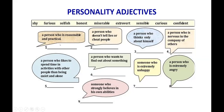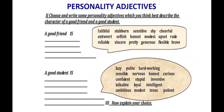Here I have another exercise for you to practice at home: choose and write personality adjectives that best describe a good friend. So — what do you think a good friend is like? Faithful, stubborn, sensitive, shy, cheerful, extrovert, selfish, honest, modest, upset, rude, reliable, sincere, pretty, generous, flexible, brave. The idea is to find new words and practice to increase your vocabulary. This is homework.